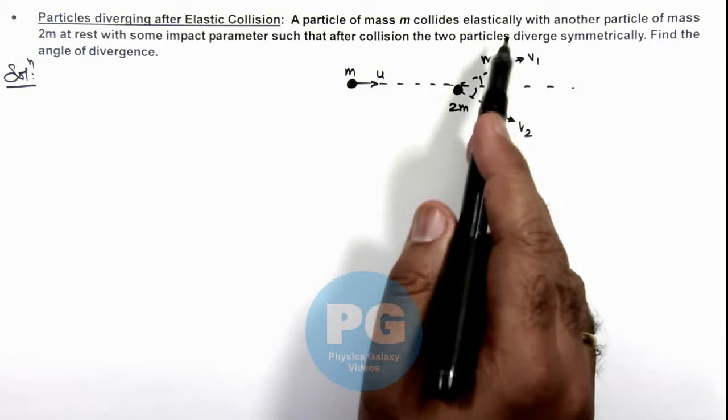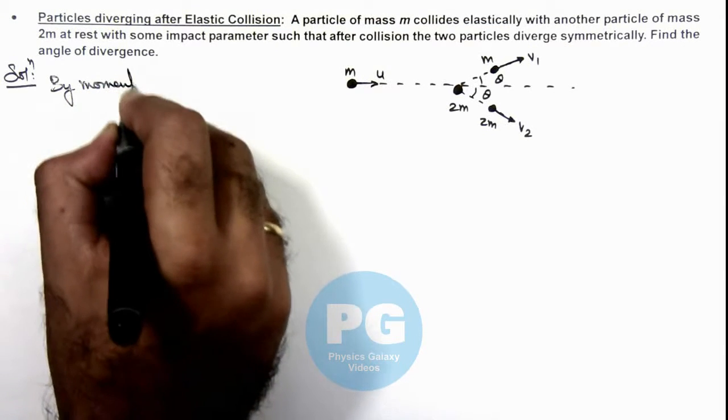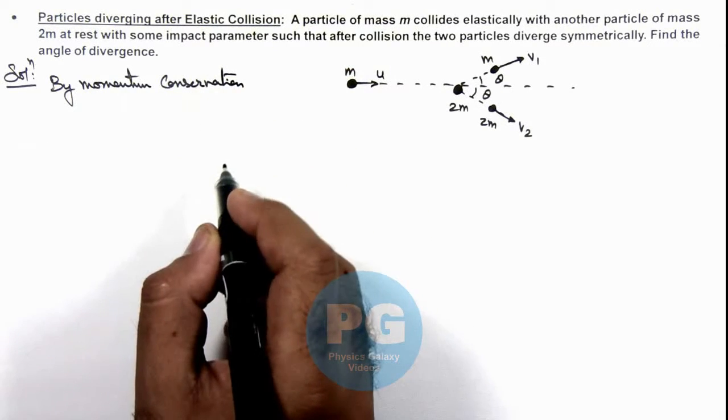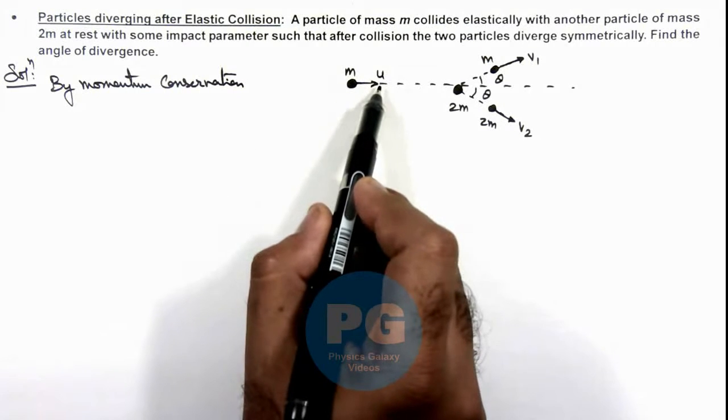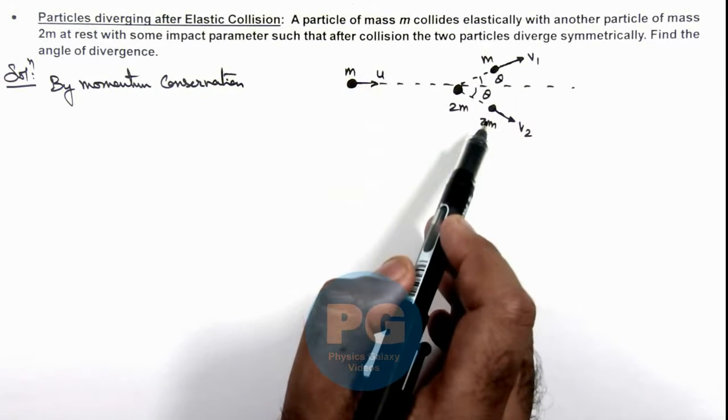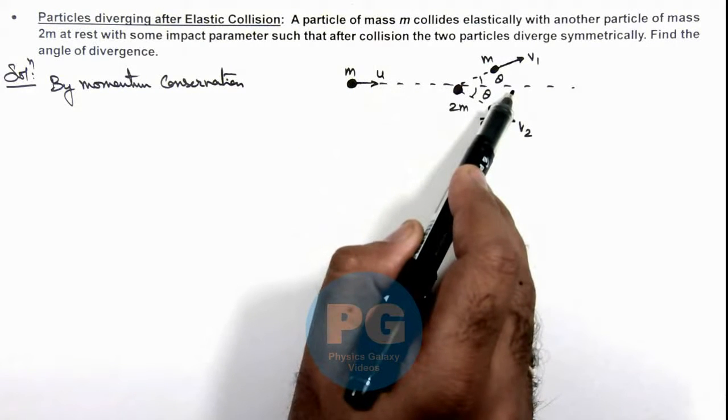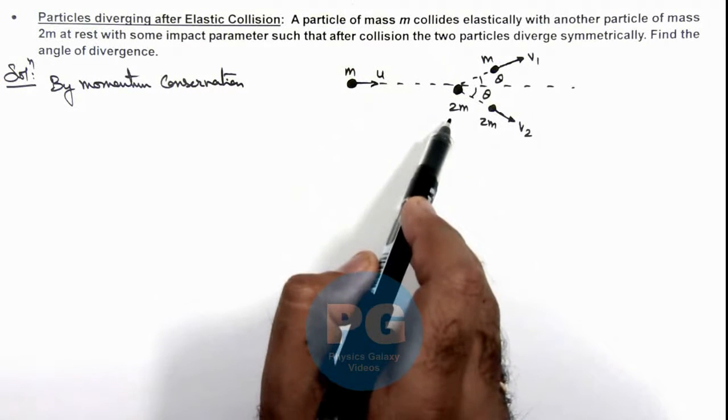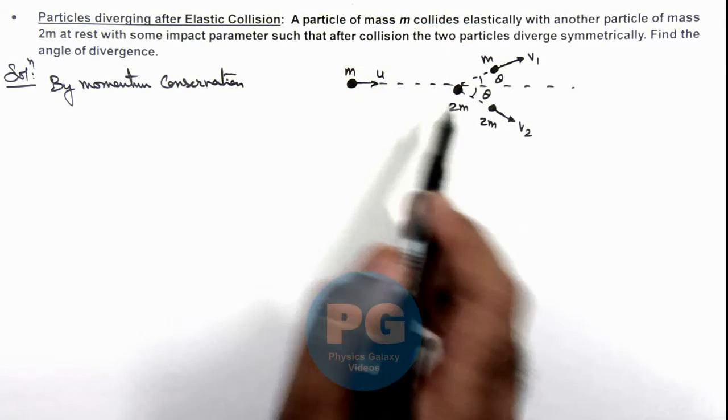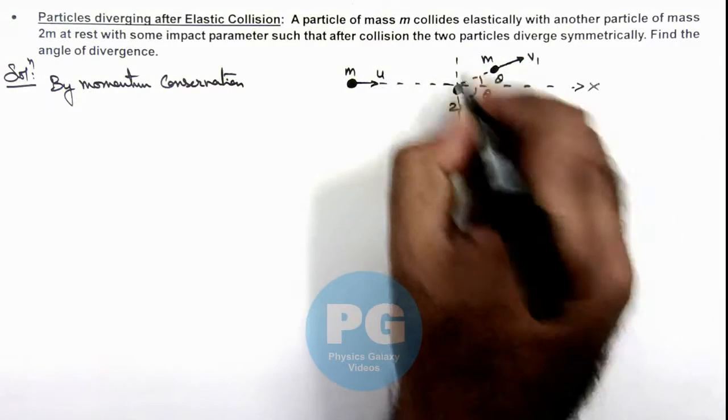As the collision is elastic we can conserve momentum and energy. So here we can write by momentum conservation, initially the ball was coming at a speed u and finally the balls are moving at speeds v1 and v2. Here we can write the momentum conservation equation along and perpendicular to motion or along the initial direction and final direction of motion. In either ways we can solve it. Say we write equation along x direction and y direction.